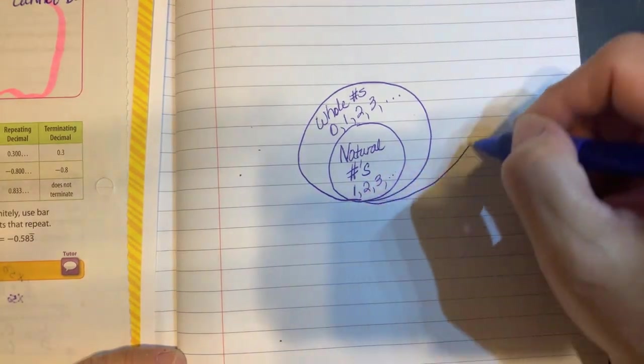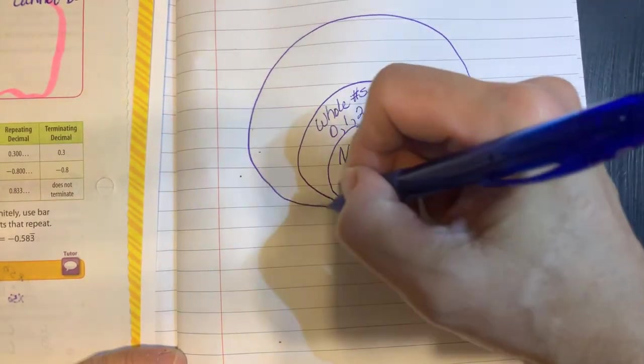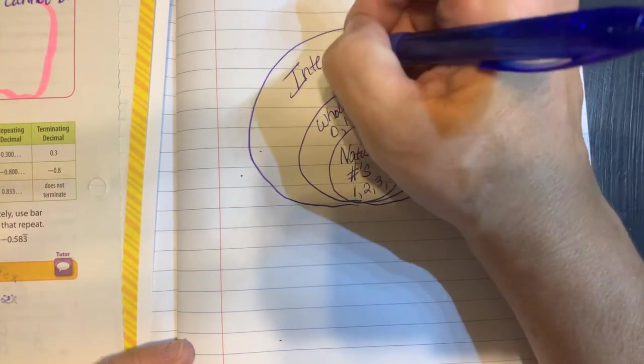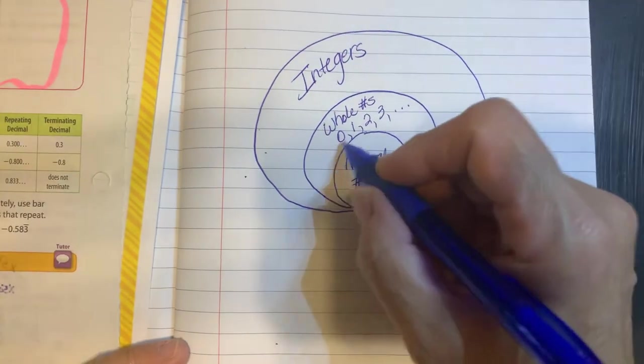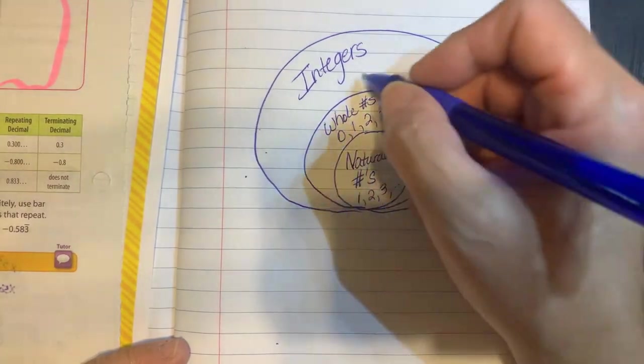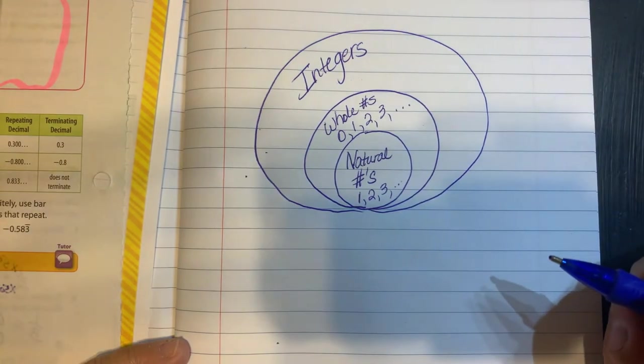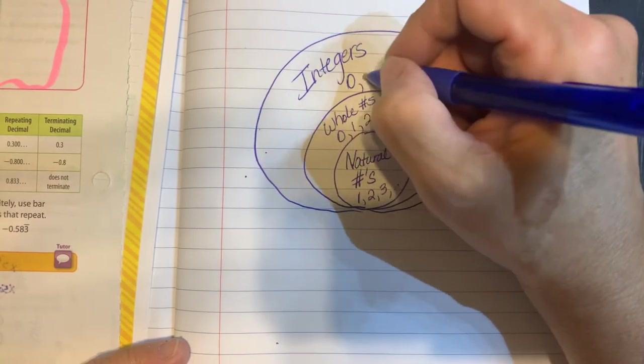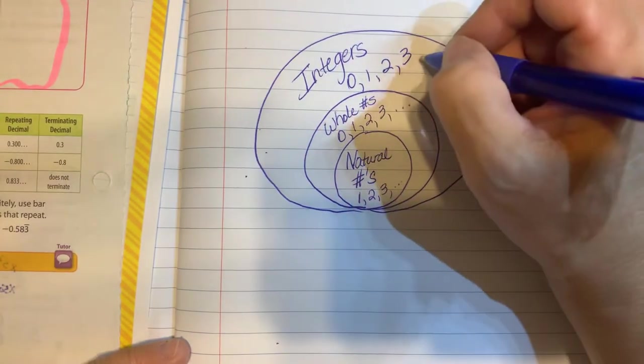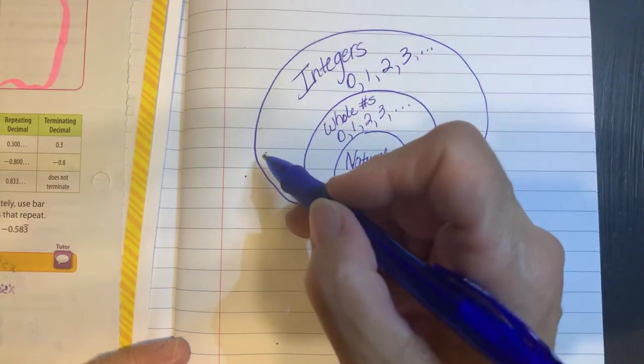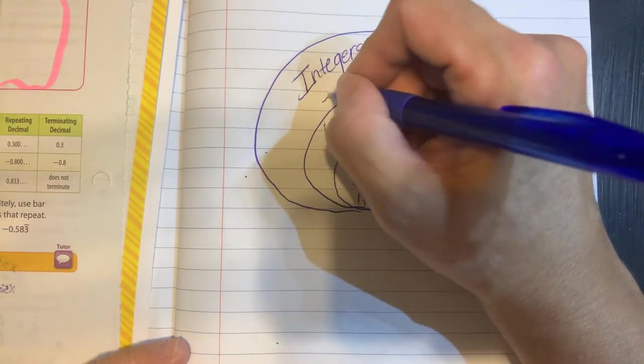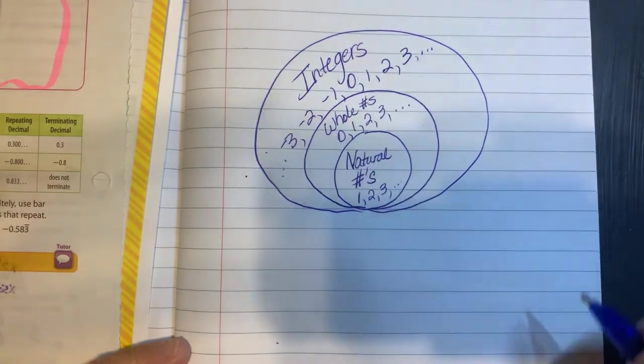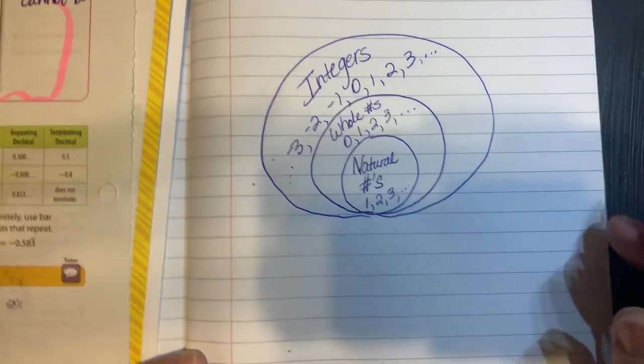Then we're going to go a little bit bigger. This time we're going to add our integers. Our integers would include the whole numbers, which includes the natural numbers, but this time it includes the negative whole numbers. It'd be like zero, one, two, three, dot dot dot. But then we're going to include their opposites. Negative one, negative two, negative three, dot dot dot. So the integers are whole numbers and their opposites.